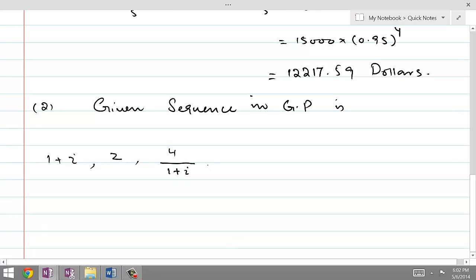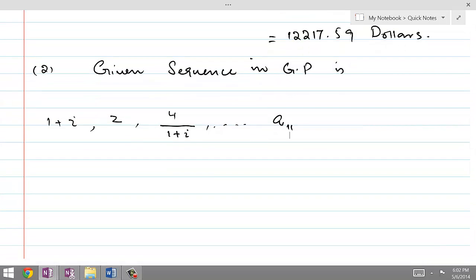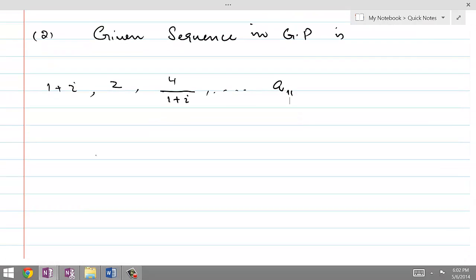And what we are required is find A11, the 11th term. The first term A is equal to 1 plus iota, which involves complex numbers, and R can be obtained by dividing second term by the first term.